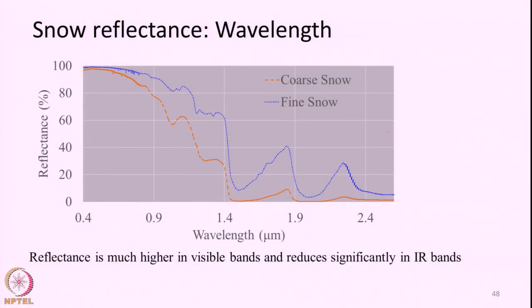We will look at the general spectral reflectance curve of snow and how it changes with grain size as well as the wavelength of observation. Looking at this particular slide, here we have plotted two curves — one is the spectral reflectance curve for fine snow with smaller grain size, and this orange curve is the spectral reflectance curve for snow with larger grain size.